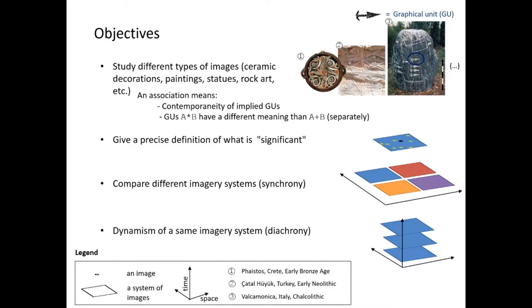An association between two graphical units means that unit A and unit B, if they are in association, are contemporaneous and their combined meaning is more than the meaning of A and B taken separately. Also, if A and B are contemporaneous and A and C are associated, then A and B are also associated. This is a special continuum of contemporaneous images.